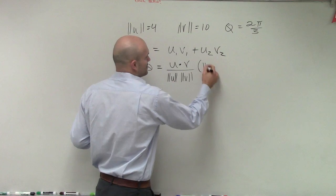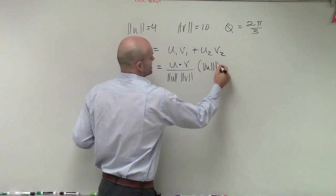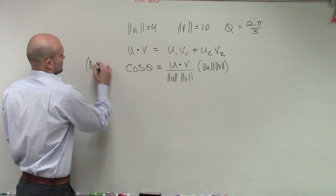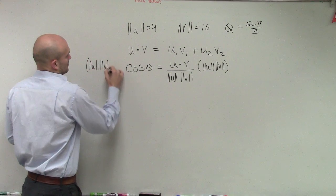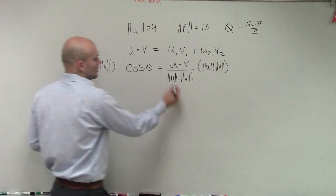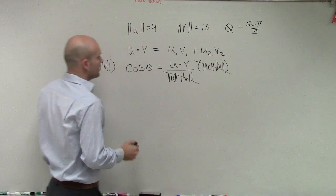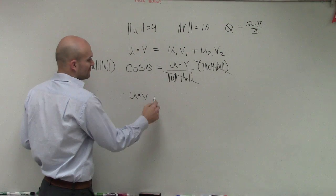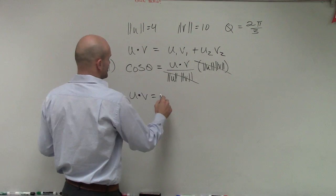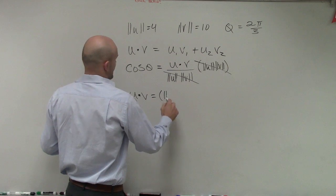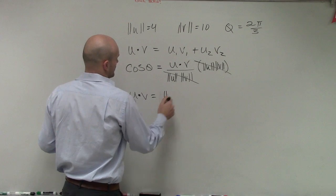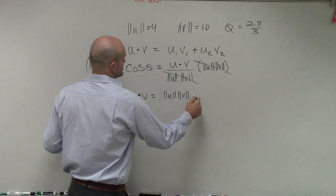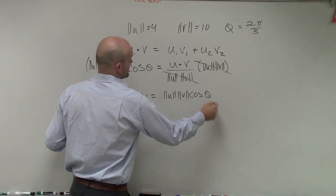I could multiply by the magnitude of u times the magnitude of v on both sides. Well, if you want to solve, then those divide up to 1, and therefore, you know that u dot v, in an alternate form of the dot product, is also the magnitude of u times the magnitude of v times the cosine of theta.